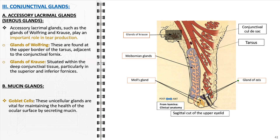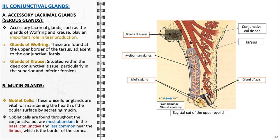Meanwhile, the mucin-producing cells, known as goblet cells, are individual mucin-secreting cells dispersed within the conjunctival epithelium. These unicellular glands secrete mucin, which forms the mucous layer of the tear film. This layer is crucial for ocular lubrication, protection, and the removal of debris. Goblet cells are found throughout the conjunctiva but are most abundant in the nasal conjunctiva and less common near the limbus, which is the border of the cornea.